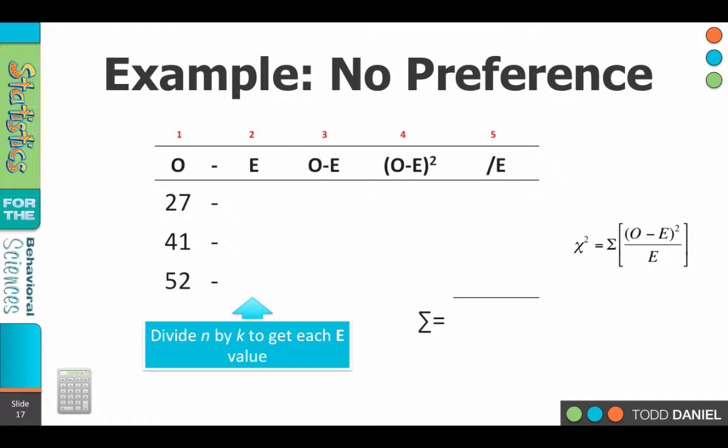The expected value is N divided by K. We had 120 red cloaked school girls who chose among three chairs. The expected value for each chair should be 40 or 120 divided by 3.